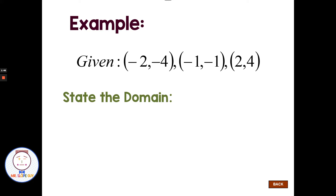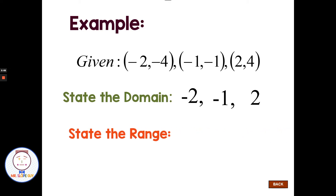So if we look at each of these points, we're talking about negative 2, negative 1, and 2 as the x values. Most of the time your answers will be written smallest to largest, but it's not particularly wrong if it's in another order — it's just customary. For the range, we're looking at all the y values or second values: negative 4, negative 1, and 4. Domain are the x values and the range are the y values.